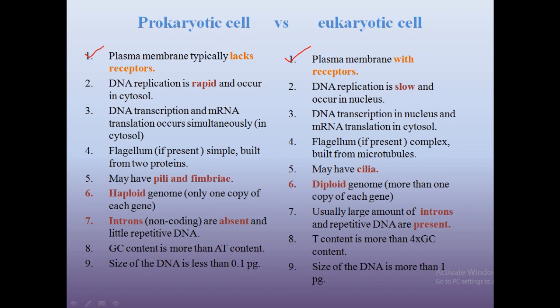In prokaryotic cells, DNA replication is rapid and occurs in the cytosol. In eukaryotic cells, DNA replication is slow and occurs in the nucleus, as there is a specific compartment for every function and it needs many more enzymes and processing steps.